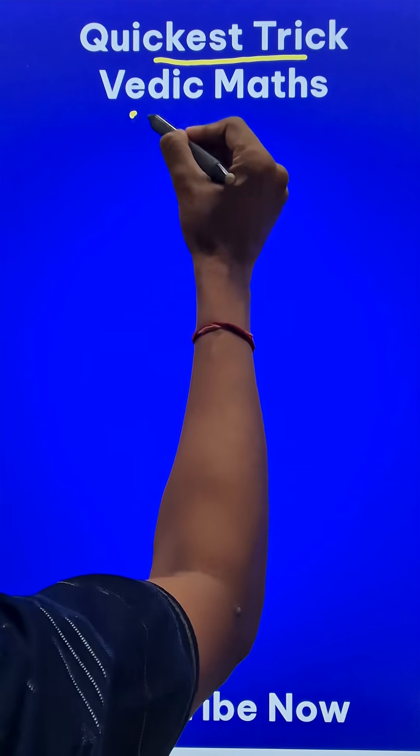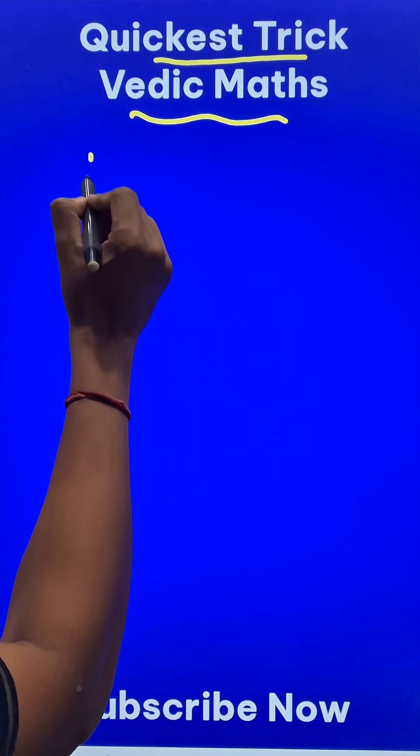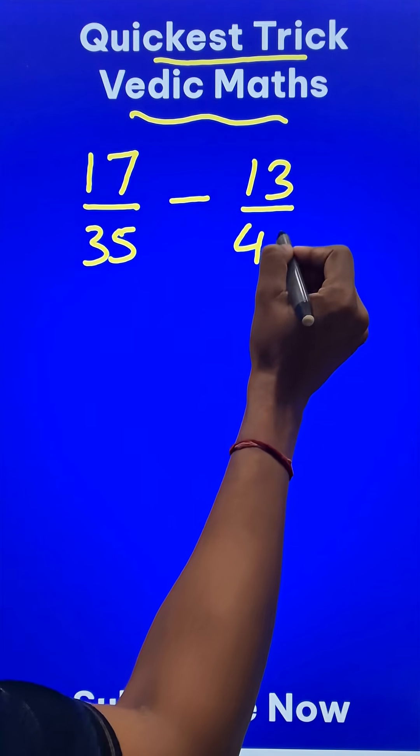Here is the quickest trick in Vedic Maths to add or subtract big fractions. Like suppose you have 17 upon 35 and you need to subtract 13 upon 45 from that.